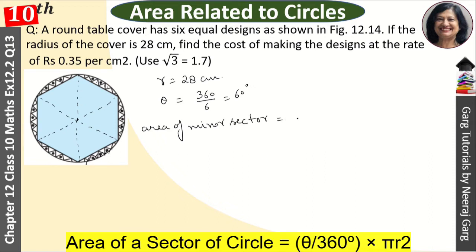And that is equal to theta upon 360 into pi r square. 22 upon 7 and r square. So 28 into 28.